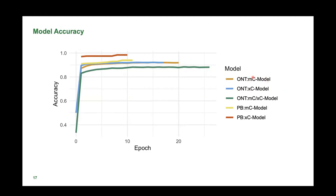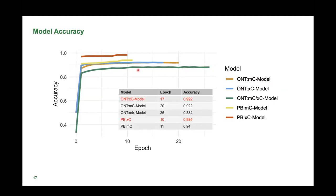For methylcytosine detection using Nanopore, we achieve 92% accuracy. For PacBio, training a model for methylcytosine gives 94% accuracy, and applying our enzymatic approach increases it to 98.4% accuracy.